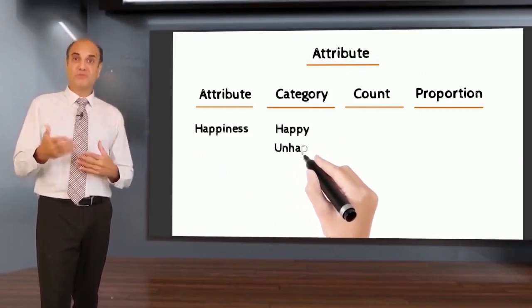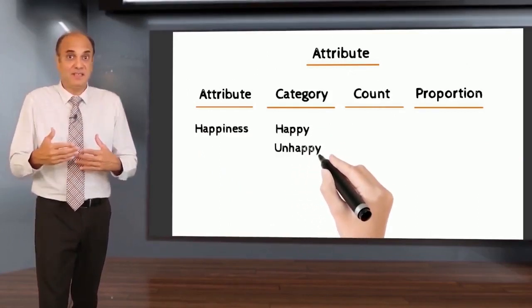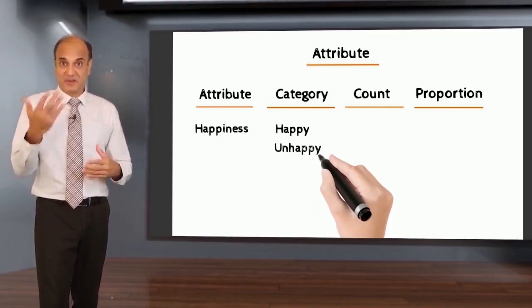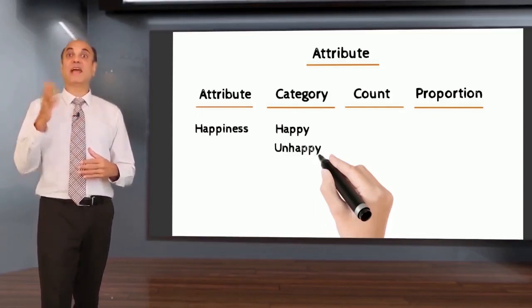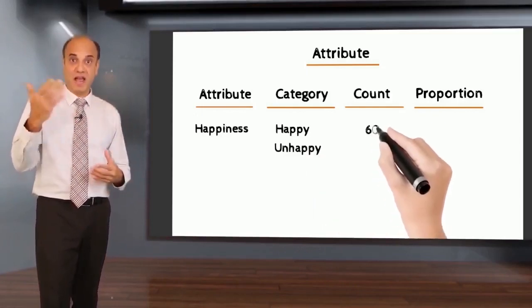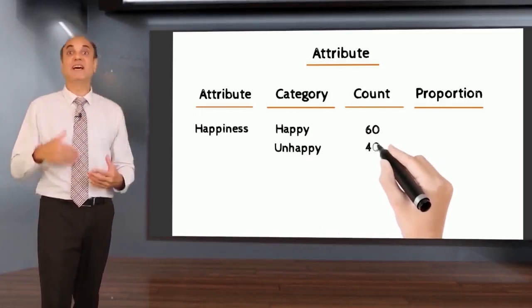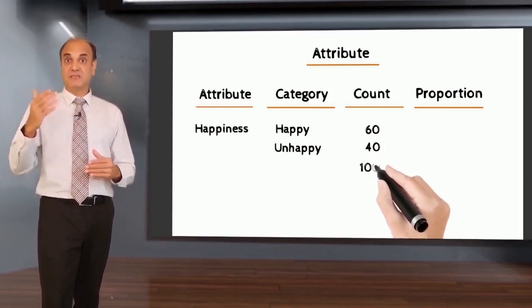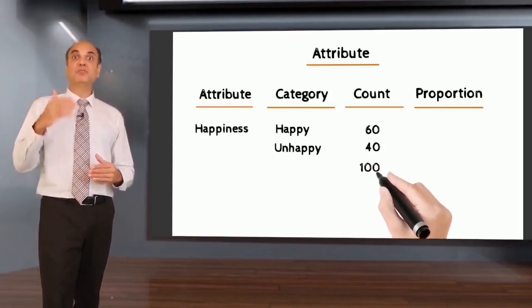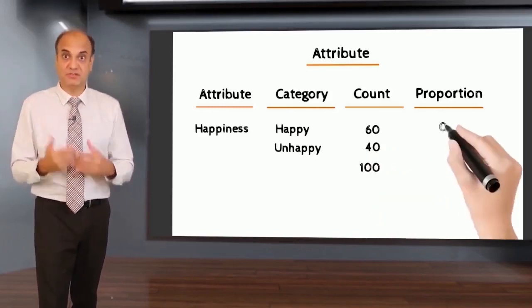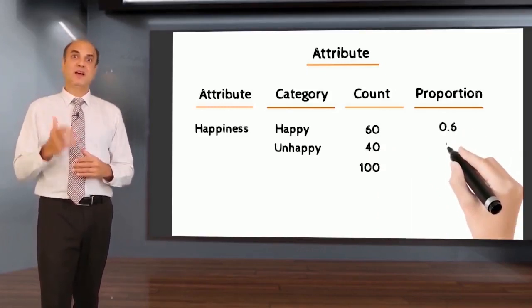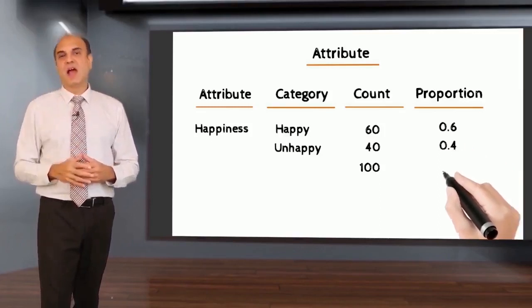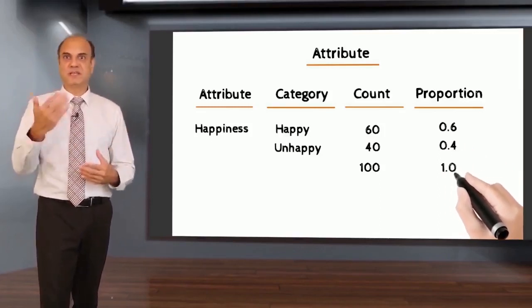If I want to increase happiness in employees, I can count how many are happy. Let's say 60 employees are happy and 40 are unhappy. I can express this as proportion: 0.6 happy and 0.4 unhappy, which can also be expressed as percentage.